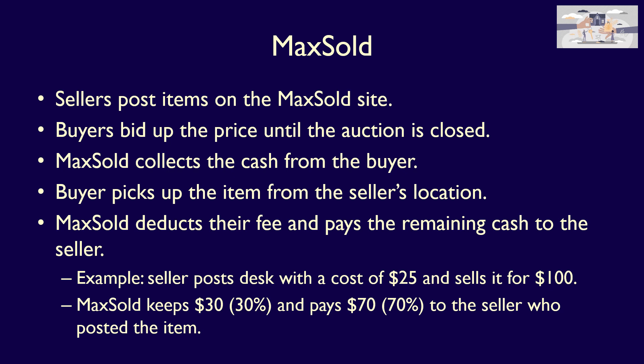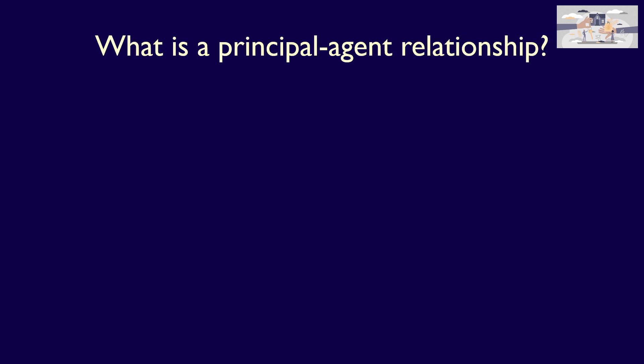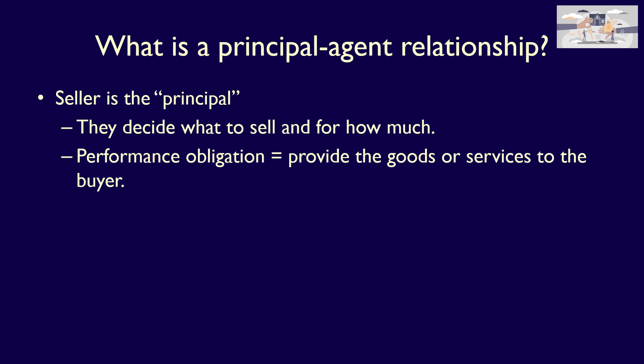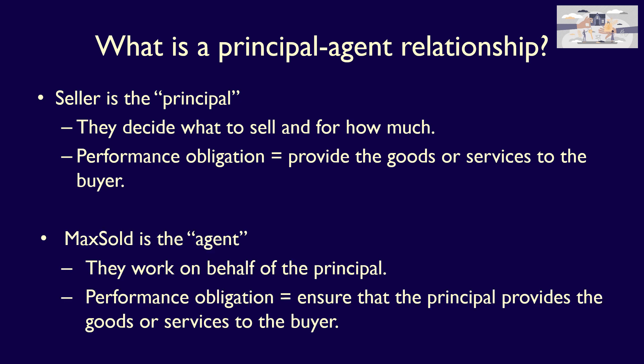If the buyer has a problem with the seller, then MaxSold is the one who deals with the customer, making sure the seller does what they promised to do, which in this case is to provide the desk in the condition shown on the auction to the buyer. This is called a principal-agent relationship. In this case, the seller posting on MaxSold is the principal. They decide on the products to sell, they decide on the price, and they have the inventory risk, in that they're responsible for the inventory during the time that the item is posted. This means that the seller's performance obligation is to provide the goods or services to the customer. MaxSold is the agent. They're working on behalf of the principal and their performance obligation is to ensure that the principal provides the goods or services to the buyer, the customer.